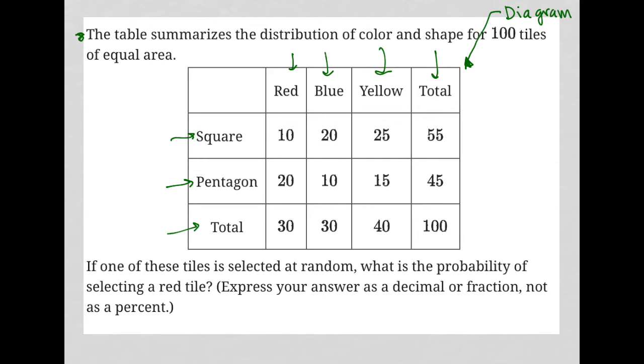So the question goes on to say, if one of these tiles is selected at random, what is the probability? On the SAT, anytime I see the word probability, I'm thinking fraction, where the numerator is what I want and the denominator is what I have. Another way to think of having is what's the total available to me.